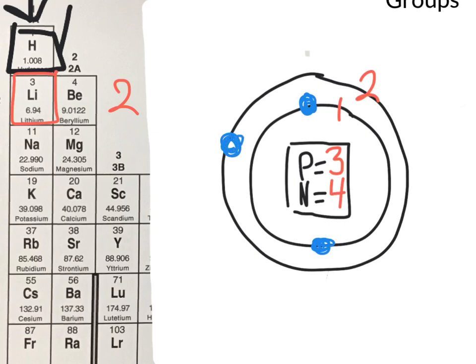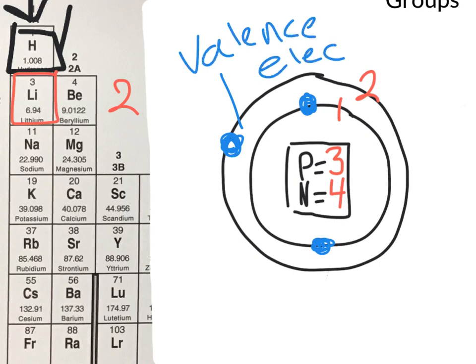Your valence electrons are the electrons in the outside ring of the atom. In lithium's case, it only has 1, so it has 1 valence electron.